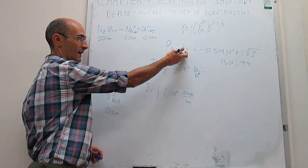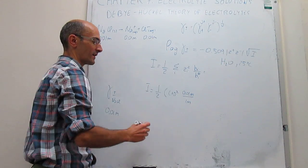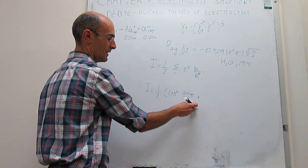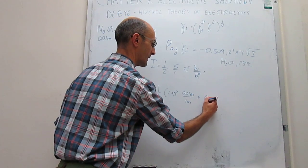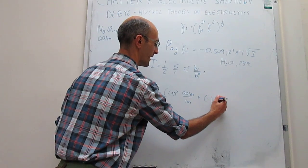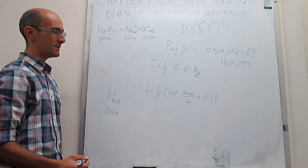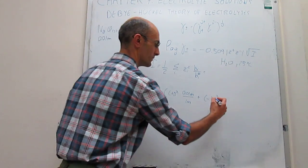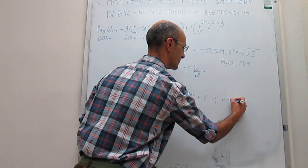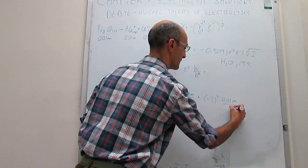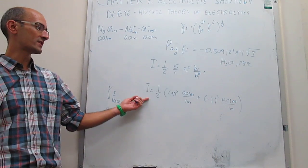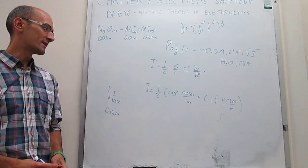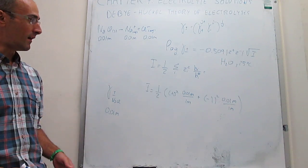That is the contribution by the sodium ions. Now we have to consider the contribution by the chloride ions, where the charge is just equal to -1 squared, and then you will have this 0.01 molal divided over 1 molal. From here you can calculate the ionic strength, which in this case is going to be 0.01 dimensionless.